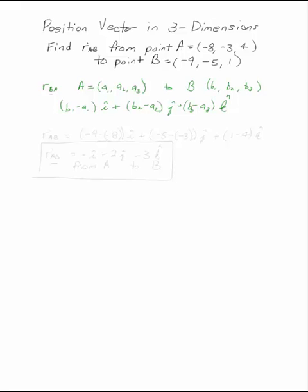To minus from. So in our case, what we're going to have is (-9 minus -8)i plus (-5 minus -3)j plus (1 minus 4)k, or in this case, -i - 2j - 3k.